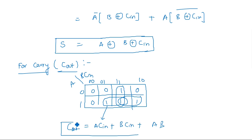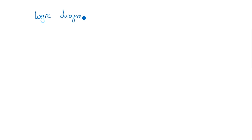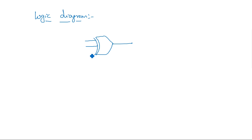To implement the carry output, we need three AND gates and one three-input OR gate. The logic diagram for the full adder derived using the K-map gives: a three-input XOR gate for Sum (A XOR B XOR Cin), and three AND gates feeding a three-input OR gate for Carry Out (ACin + BCin + AB).